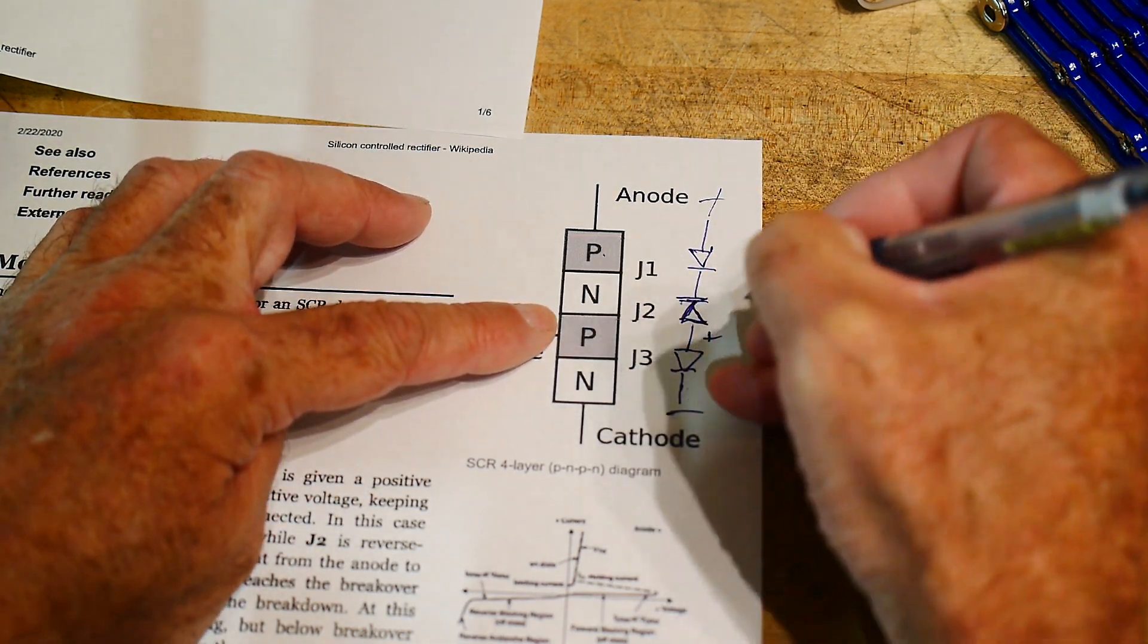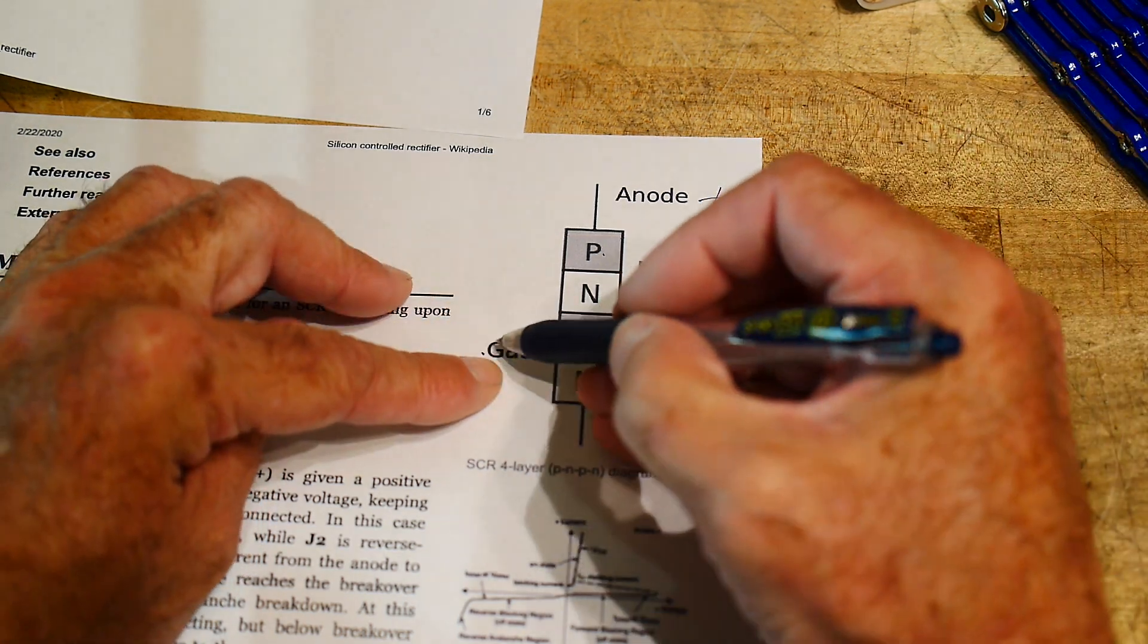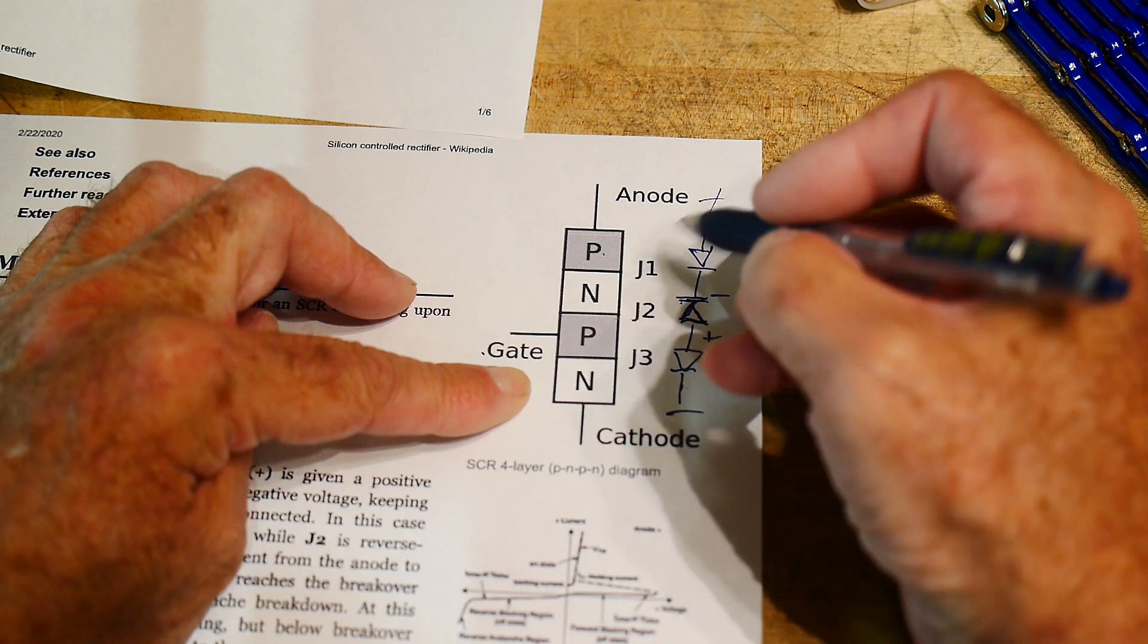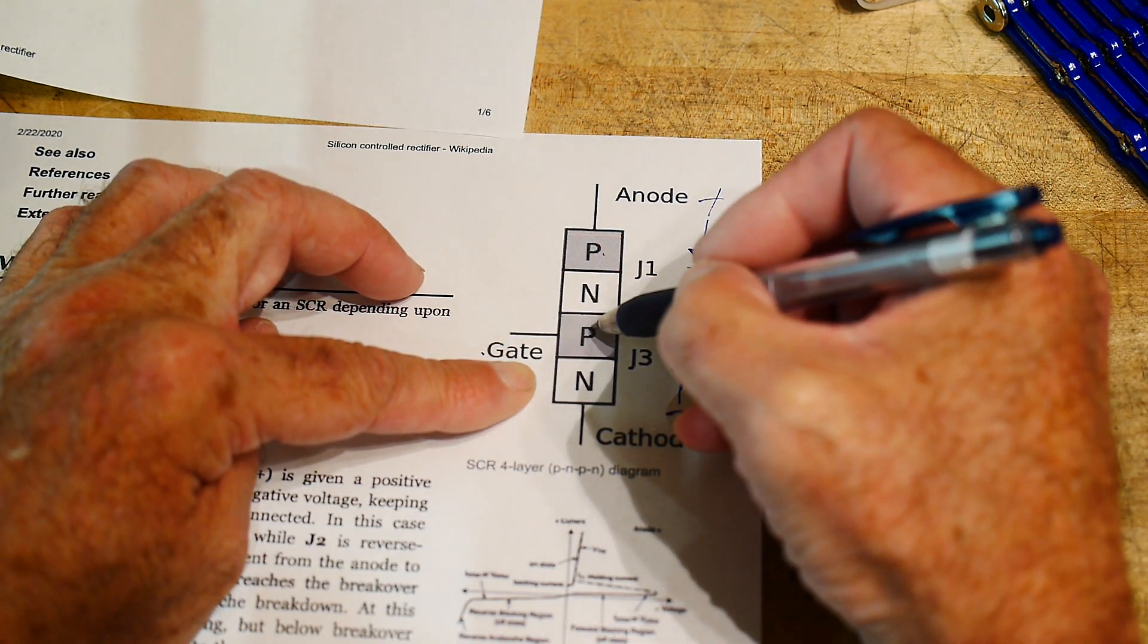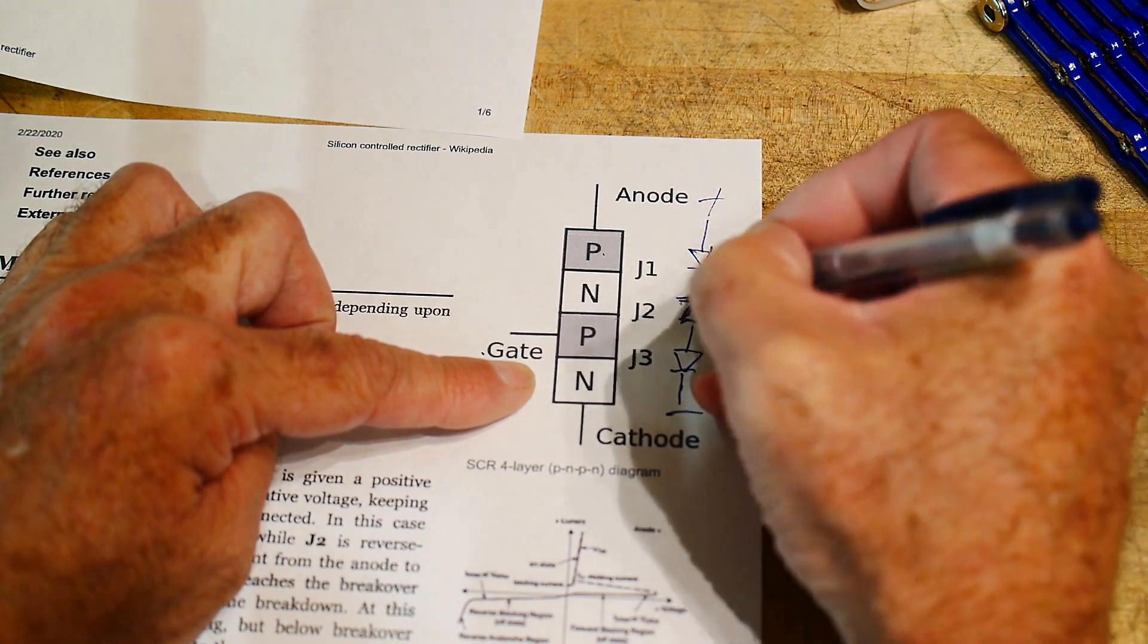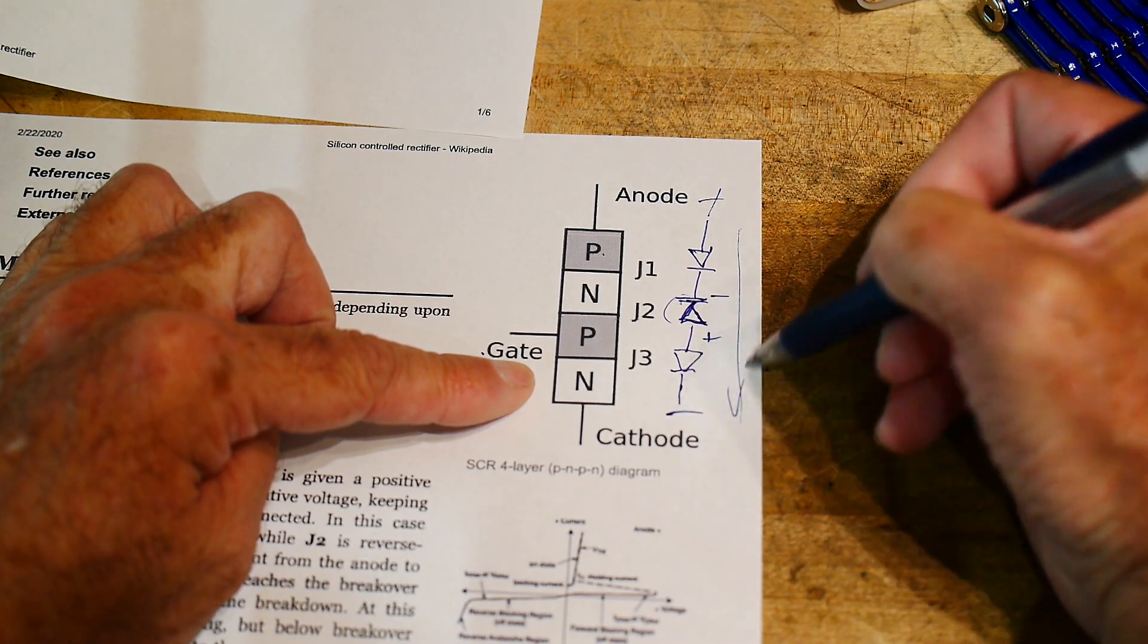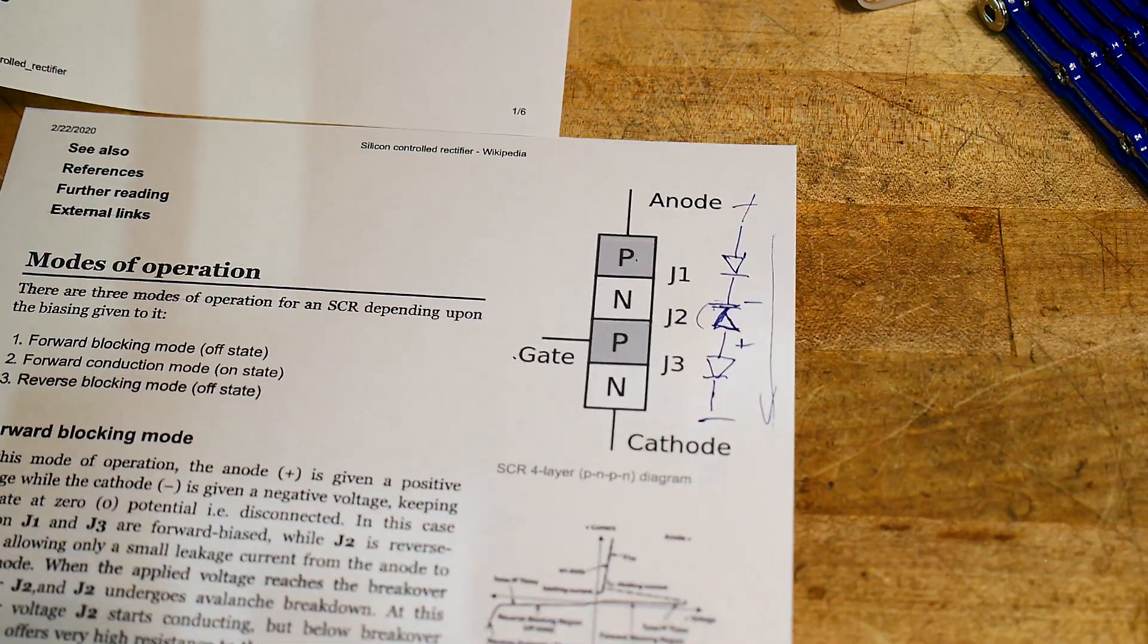So how do we turn this switch on? Well, we would need to put a plus and a minus across this diode. And we're going to do that by adding a plus voltage to the gate. If the gate is at a plus, it will then create an electron flow into this diode. And it will turn this thing on and then current will conduct through the rest of it. So that's sort of the way it works. It's sort of an odd thing.